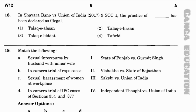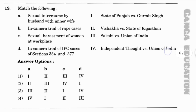Question number 18: In Shayara Bano versus Union of India (2017) 9 SCC 1, the practice of which type of talaq has been declared illegal? Option 1: talaq-e-ahsan; option 2: talaq-e-hasan; option 3: talaq-e-biddat; option 4: tafwid. The correct answer is option 3 — talaq-e-biddat.